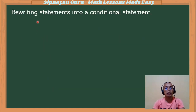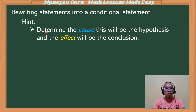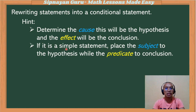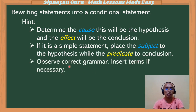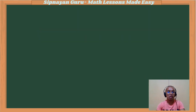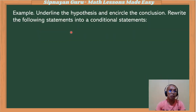How are we going to rewrite a simple statement into a conditional statement? First, determine the cause — this will be the hypothesis — and the effect will be the conclusion. If it is a simple statement or sentence, place the subject as the hypothesis while the predicate becomes the conclusion. We should also observe correct grammar and insert terms if necessary.